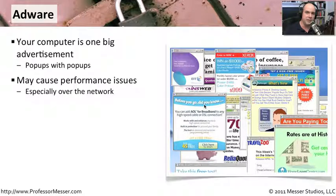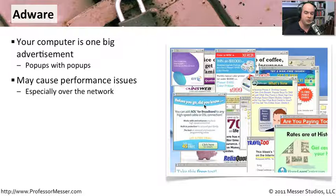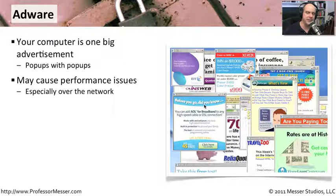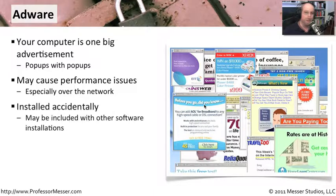This can also cause performance issues for you, having this information come across the network. This malware is probably communicating back to the mothership — the things that you may have clicked on, the things you may have seen. There can be performance issues associated with your computer once this malware is on your computer presenting these ads, so you may see things slow down just a little bit.